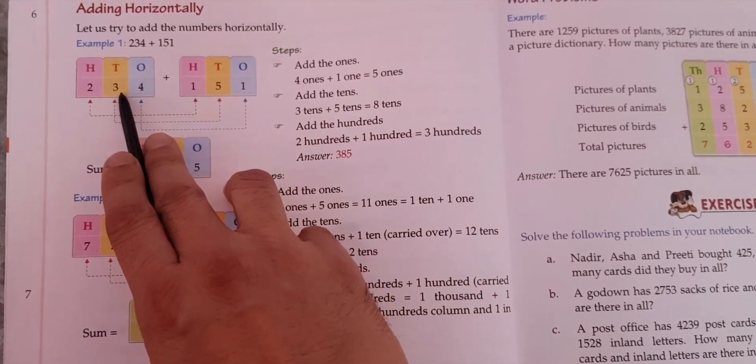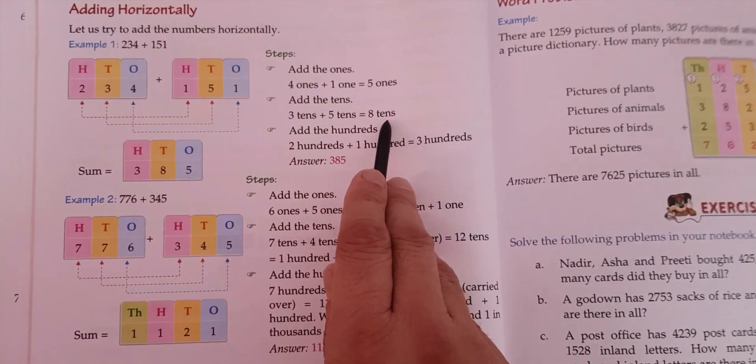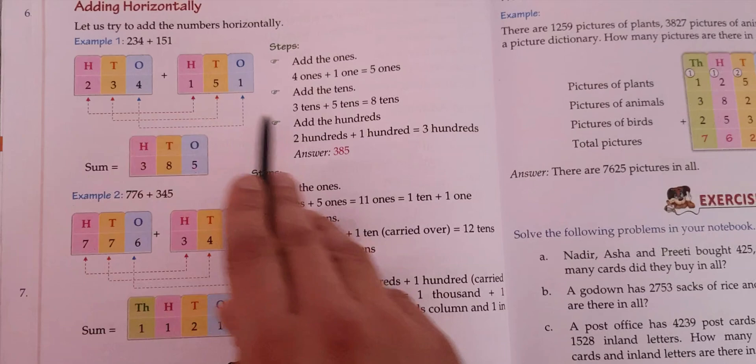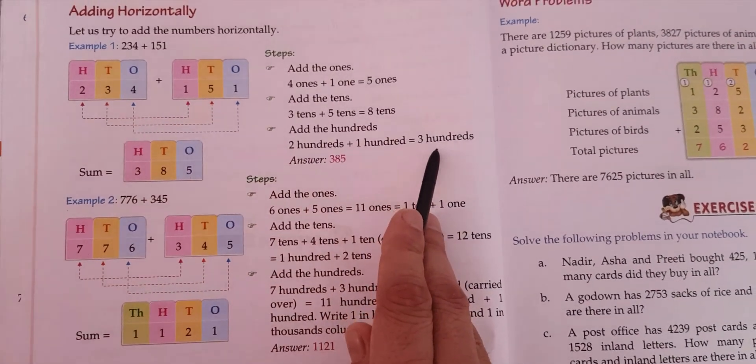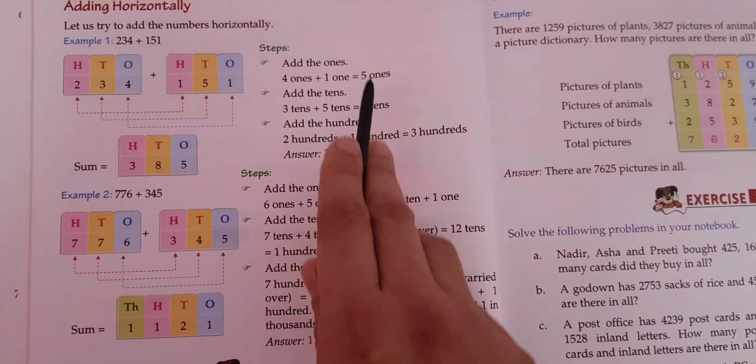Now we go through the tens place. Three tens plus five tens gives you eight tens, and then we add the hundreds. Two hundreds and one hundred gives you three hundreds. So three hundreds, eight tens, five ones means 385 is the answer. Let's deal with another example.